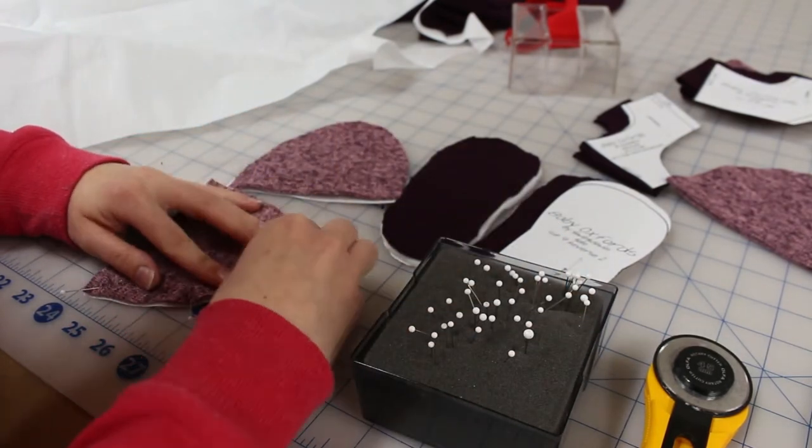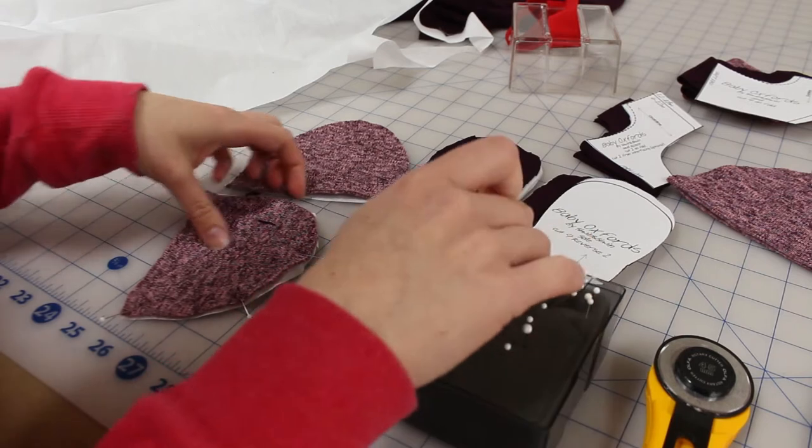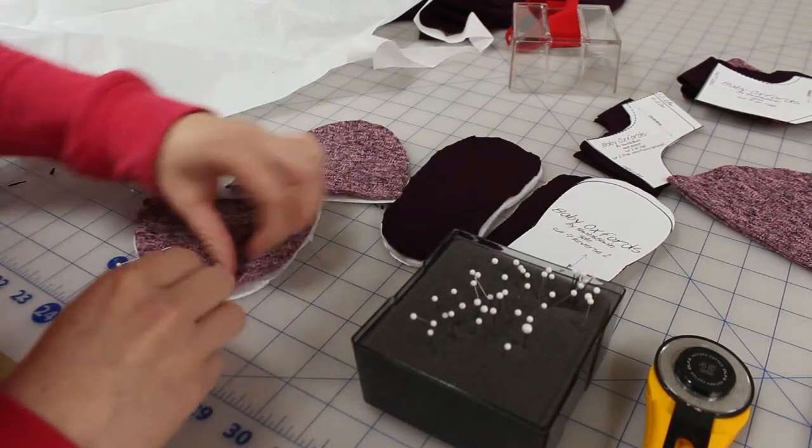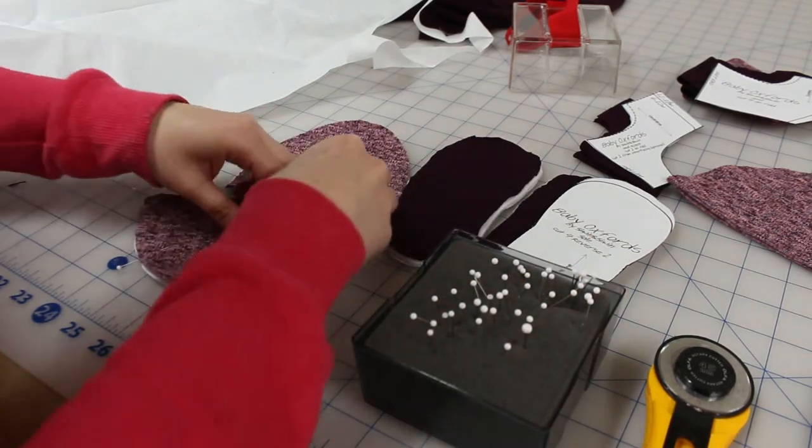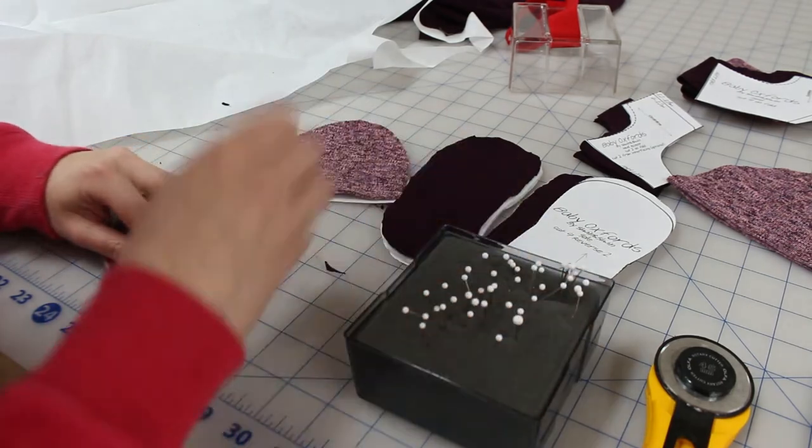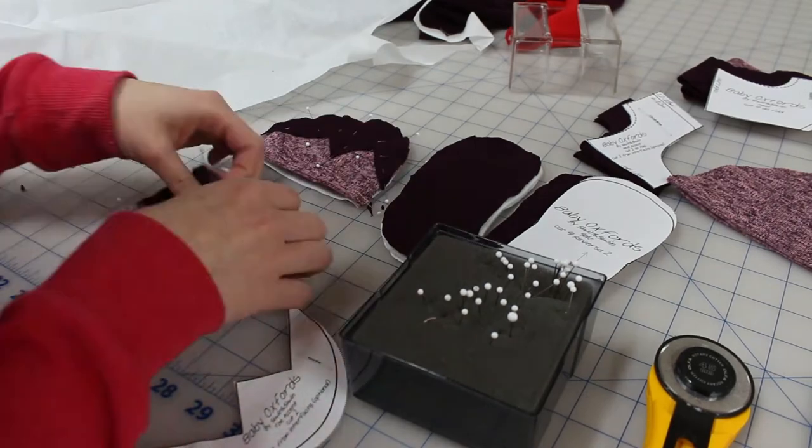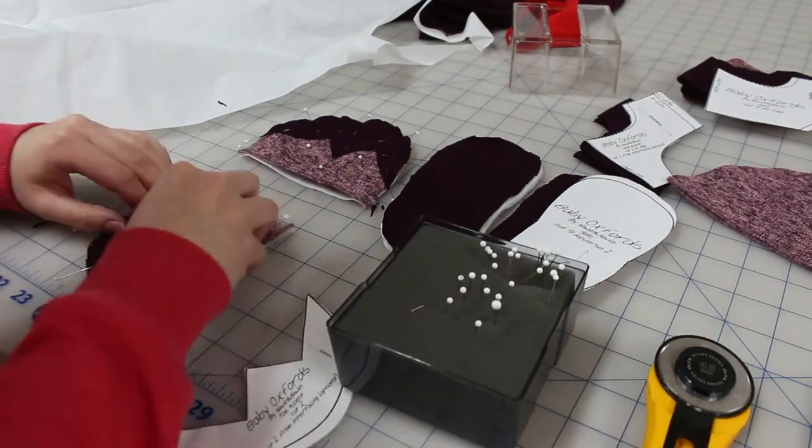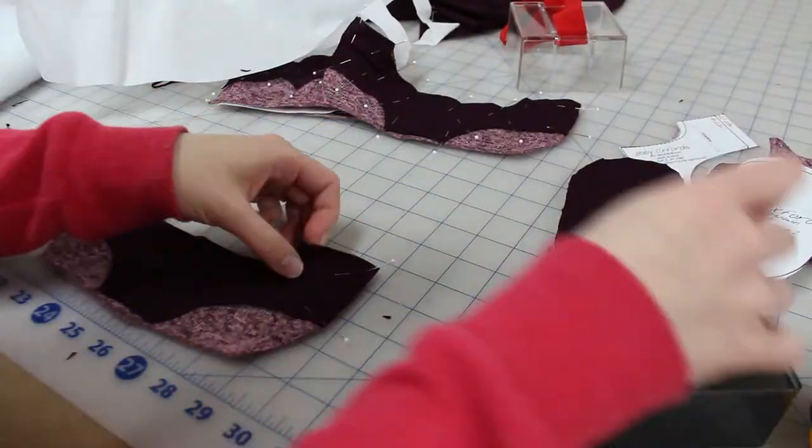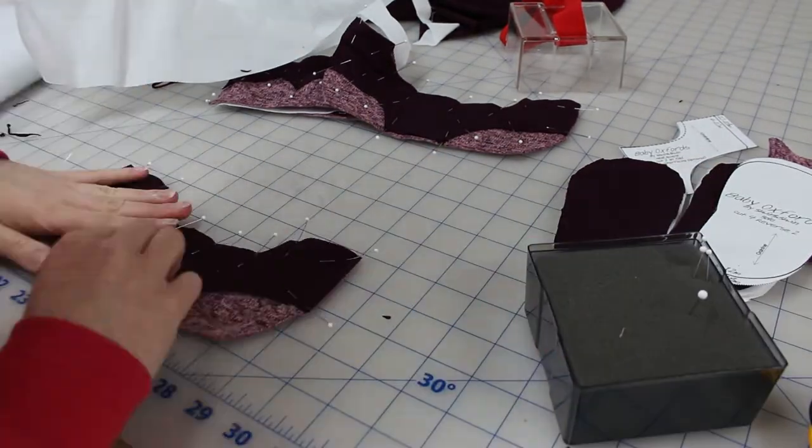Because the next step of the pattern says to sew on the accent piece that goes on top, so I want to catch all of those pieces at the same time. So now I have both accent pieces pinned for my heel and the top of my shoe, I'm going to go ahead and zigzag those on.